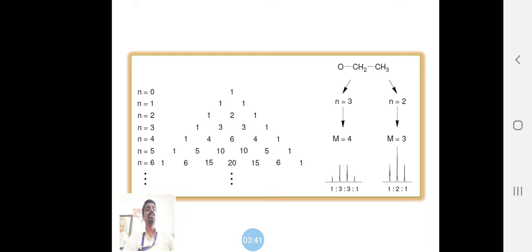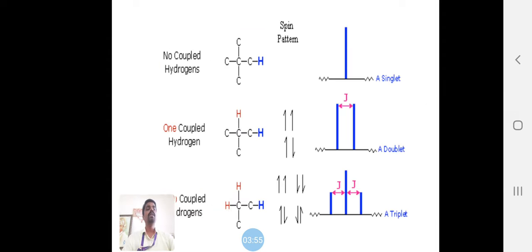There are 4 and 3 signals, so the ratio we are getting is m = 4, which means the magnetic quantum number is 4, which is 1:3:3:1. And another thing, m = 3 means 1:2:1. These are the signals: singlet, doublet, triplet, and quartet. The J value is the coupling constant, which we measure through these techniques.